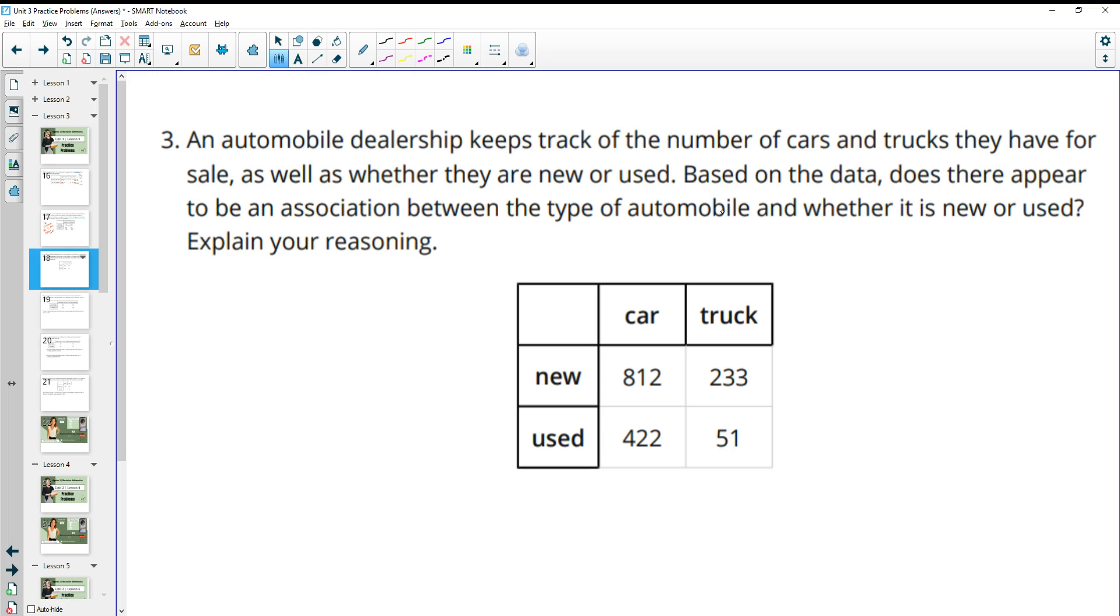Number three, an automobile dealership keeps track of the number of cars and trucks they have for sale, as well as whether they are new or used. Based on the data, does there appear to be an association between the type of automobile and whether it's new or used? So let's just add together the number of new cars there are. 812 plus 233 gives us 1,045 here. So if we do 812 divided by 1,045, we get about 78 percent of the new vehicles are cars. And then 233 divided by 1,045 tells us that 22 percent of the new vehicles are trucks.